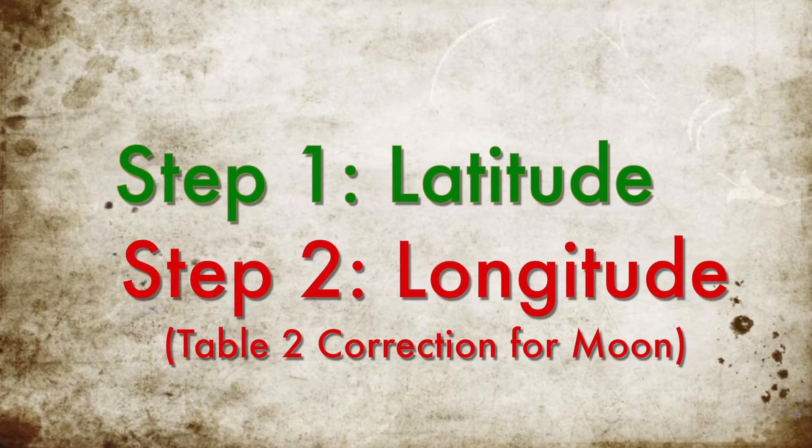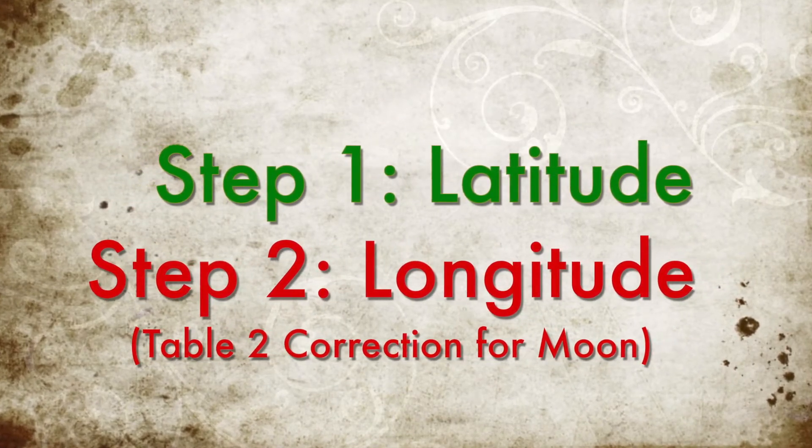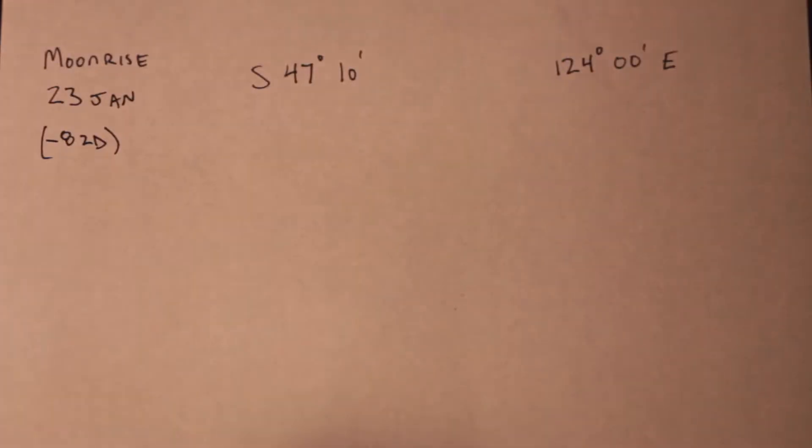If you remember the examples in the last episode, our process was to correct values from the nautical almanac, first for latitude and then for longitude. And for the moon, we just had to remember to use table 2.